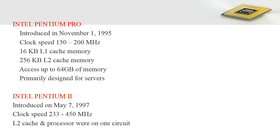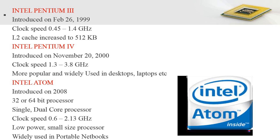In the Pentium Pro, Level 1 cache was integrated with the processor circuitry itself, while Level 2 cache came as an external component. The Intel Pentium 2, introduced in 1997 with a clock speed of 233 to 450 MHz, brought an important improvement: from Pentium 2 onwards, both Level 1 and Level 2 cache are integrated with the processor circuitry itself.